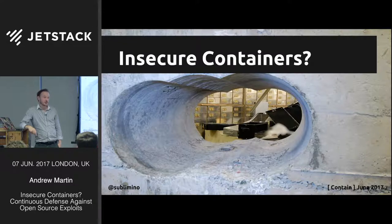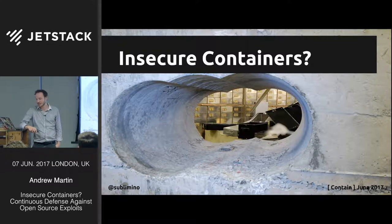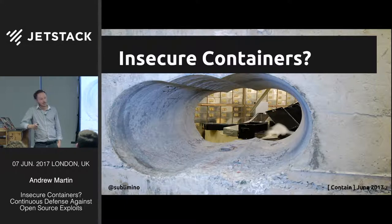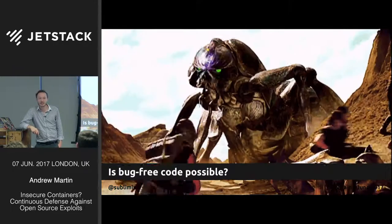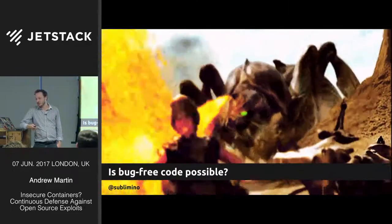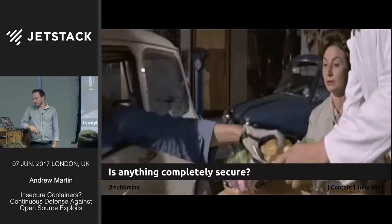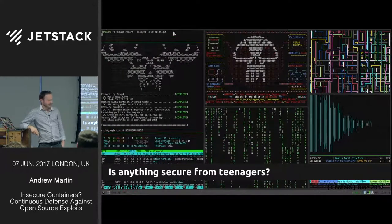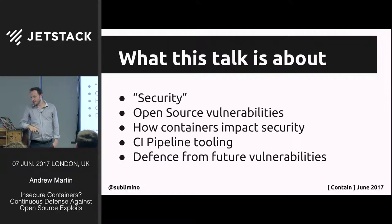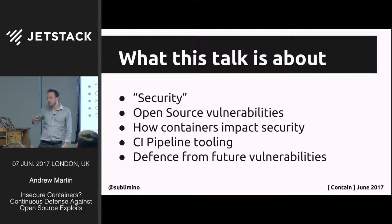Are containers really secure? Do they really contain threats? What can they contain, and how have they defended against major recent vulnerabilities? Our users expect their data is safe when they hand it over to us. We can't protect data if code in the system has bugs and unspecified code paths. This talk covers the anatomy of some recent vulnerabilities, containers, a rundown of various tools, and how to use pipelines to defend ourselves continuously against future vulnerabilities.